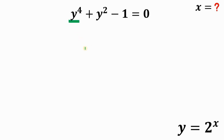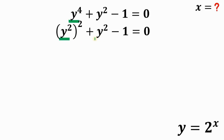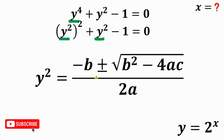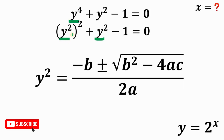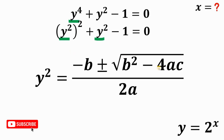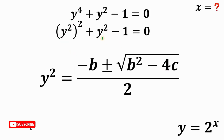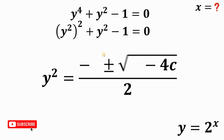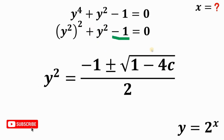We can rewrite the expression as y squared raised to the second power, because we now have a quadratic equation in terms of y squared. Using the quadratic formula: y squared equals negative b plus or minus square root of b squared minus 4ac, all over 2a. Here, a is the coefficient of y squared squared, which is 1; b is the coefficient of y squared, which is 1; and c is the constant term, which is negative 1.